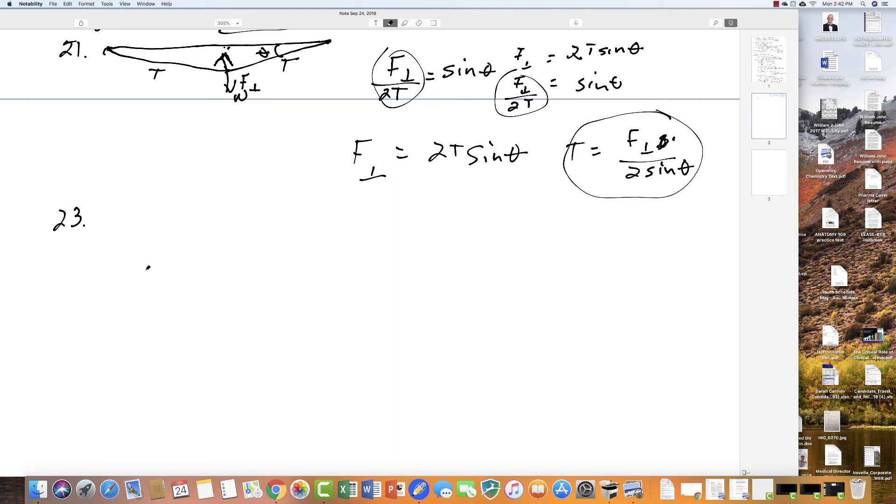Number 23 states that a 5 times 10 to the fifth kilogram rocket accelerates straight up. So the mass is 5 times 10 to the fifth kilograms. And the engines produce a total thrust. So the total thrust is 1.250 times 10 to the seventh newtons. And the air resistance, which works against it, we'll just call this friction, is 4.50 times 10 to the sixth newtons. What is the rocket's acceleration?